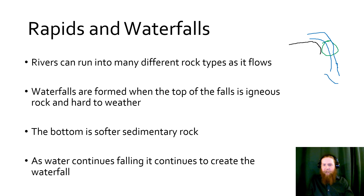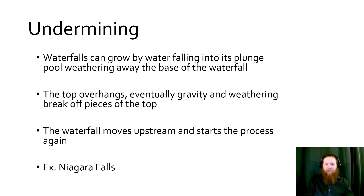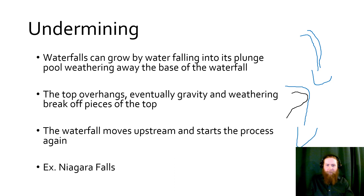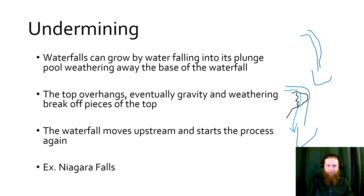As the water continues to fall, we get the plunge pool effect — it gets deeper and deeper, and the waterfall gets higher and higher. Eventually we get overhanging structures where water flows over the edge and down into the pool. When undermining happens, that overhanging piece breaks off, the new waterfall carries it away, and the waterfall has moved upstream — albeit not very far. This is how Niagara Falls formed: it was undermined continually until we get the really big structure that Niagara Falls is today.